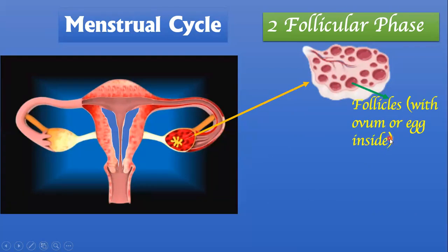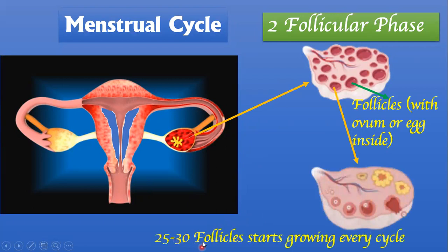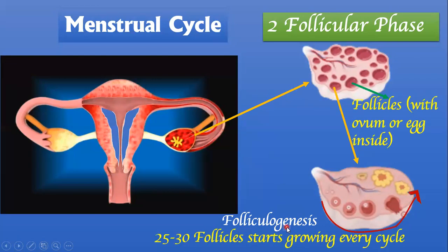The follicular phase lasts from day 6 to day 13. During this time, each ovary picks up nearly 25 to 30 follicles, and these start growing from the primordial stage to the graafian stage — a process known as folliculogenesis. So two things happen during the follicular phase: formation of the endometrium under the influence of estrogen, and folliculogenesis where 25 to 30 follicles in each ovary start growing.